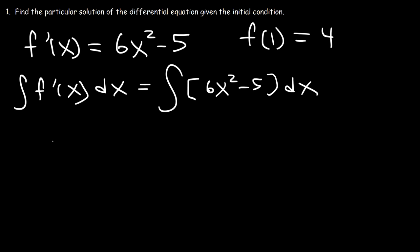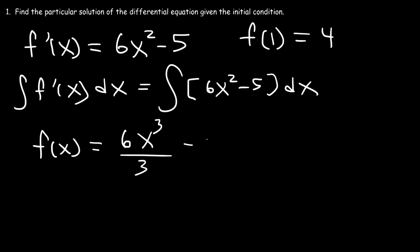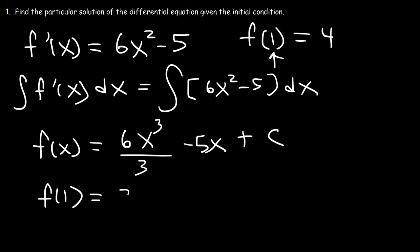On the left side, it's just going to be f(x). On the right side, the antiderivative of x squared using the power rule — you add 1 to the exponent, 2 plus 1 is 3, and then divide by that number. The antiderivative of negative 5 is simply negative 5x. And don't forget the constant c. So now let's replace x with 1: f(1) is going to be 6 divided by 3, which is 2, times 1 to the third, minus 5 times 1 plus c.